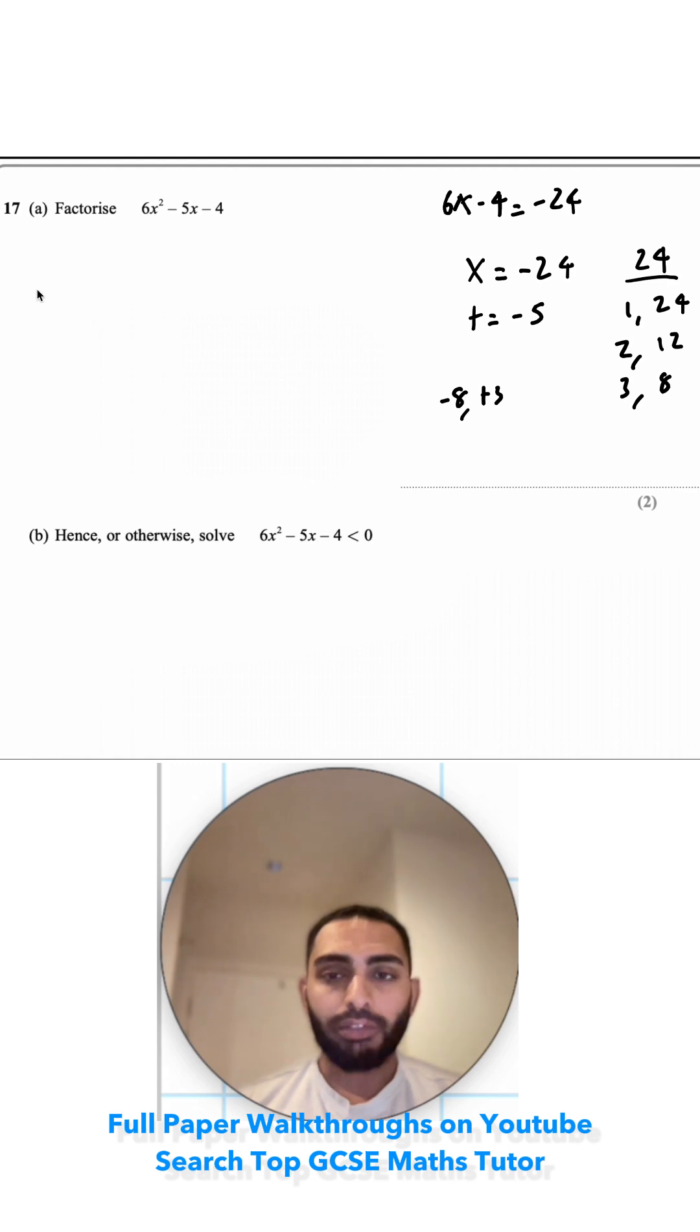Because this is a 6x squared, I'm going to write 6x in the first bracket, minus 8. And in the second bracket, 6x again, plus 3.